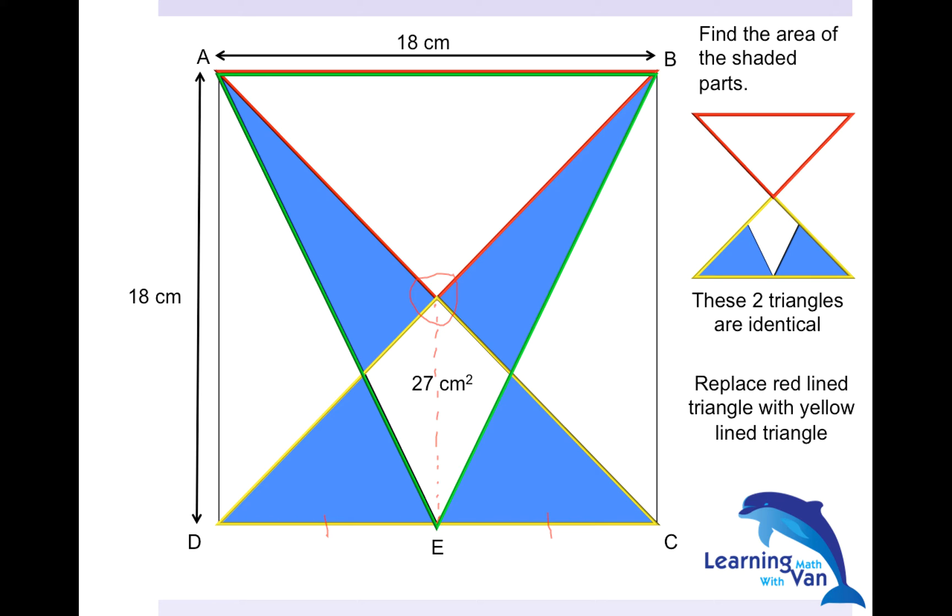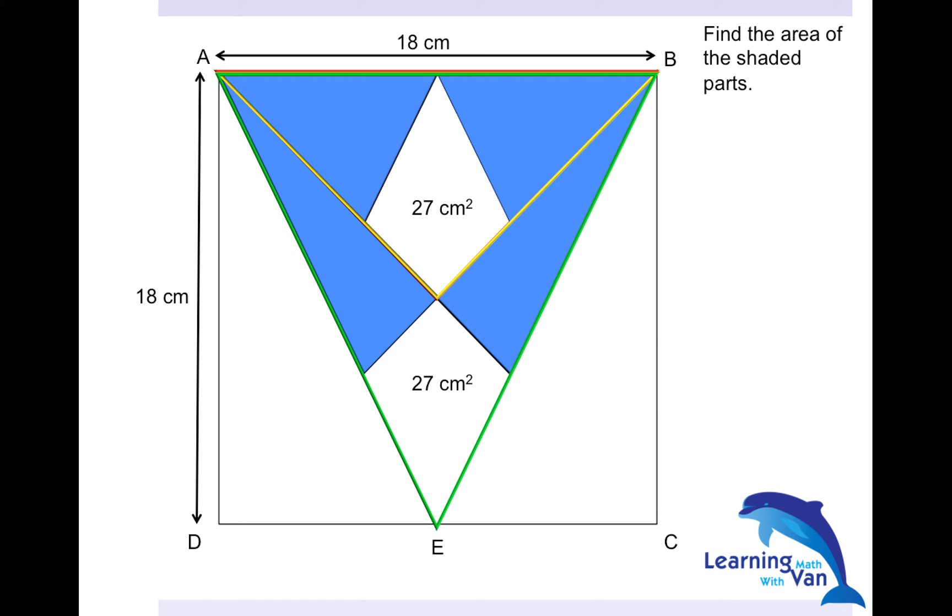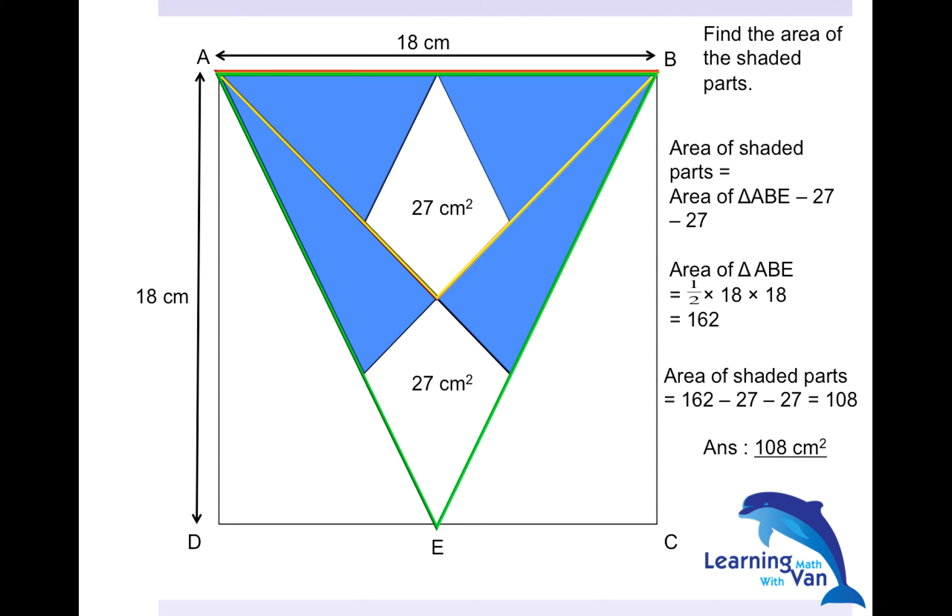See that? So what happens is that basically you can flip over the yellow line triangle onto the red. And with that, as what I said just now, we have already identified triangle ABE. You will know how to solve the rest of the question because basically area of shaded parts is equal to the area of triangle ABE less the two groups of 27. So you work out what is triangle ABE to be half times the base times the height of 18 centimeters respectively. You have 162. So your answer will be 108. Remember, in the answer always indicate the units of measurement. So 108 centimeters squared.